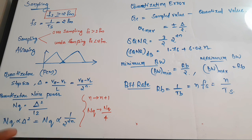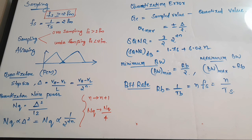Today's video is the formula revision video of digital communication. We are going to see the basic equations for sampling, quantization, PCM, DPCM, and delta modulation. We will also discuss TDM (time division multiplexing) and FDM (frequency division multiplexing) and their comparison. This is part one and we'll be doing part two very soon.